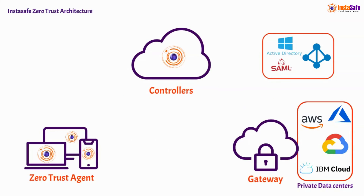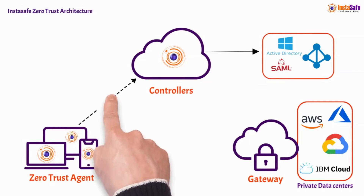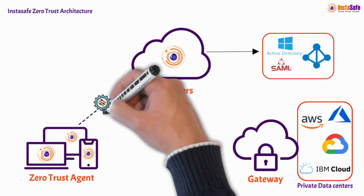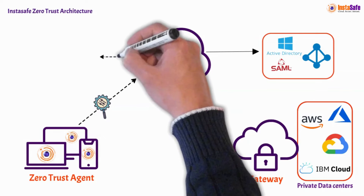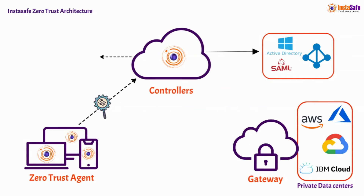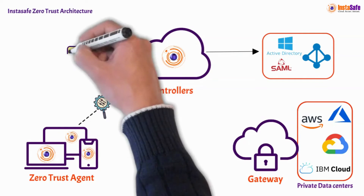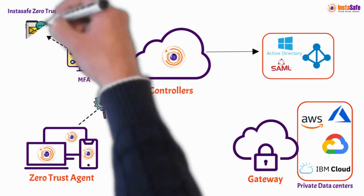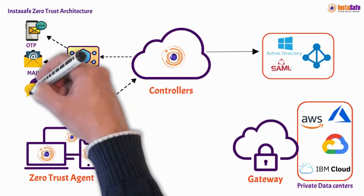Here is the step-by-step process on how the secure communication happens between client and gateway. The user logs into the agent with credentials and initiates the connection with the controller. User credentials along with device parameters are passed to the controller.